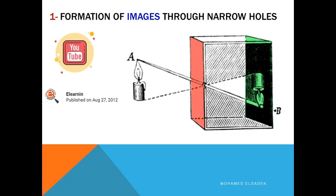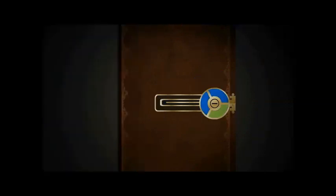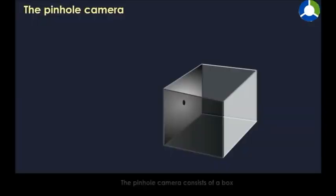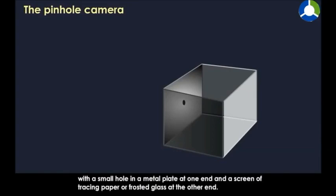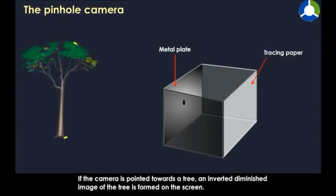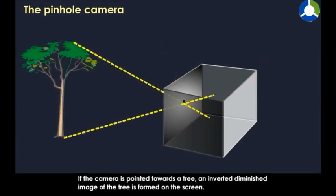You have to make an activity. The pinhole camera consists of a box with a small hole in a metal plate at one end and a screen of tracing paper or frosted glass at the other end. If the camera is pointed towards a tree, an inverted diminished image of the tree is formed on the screen.